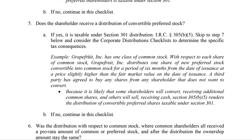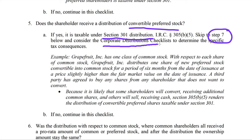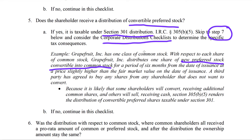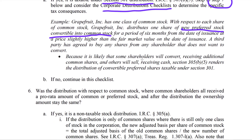The fifth situation: if any shareholder receives convertible preferred stock, it's treated as a Section 301 distribution. We skip to Step 7 to determine the basis and apply the corporate distributions checklist. For example, shareholders receiving new preferred stock that's convertible into common stock — that's considered a Section 301 taxable distribution.